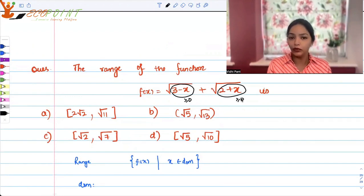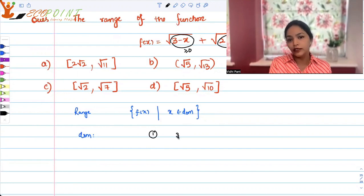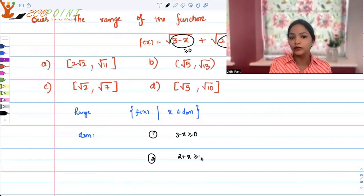For both the square roots, the conditions should be simultaneously getting satisfied. I can only take those x's which satisfy both conditions. So, 3 minus x should be greater than or equal to 0, and at the same time, 2 plus x should be greater than or equal to 0. This means x could be less than or equal to 3 and x should be greater than or equal to minus 2.